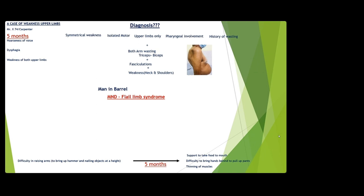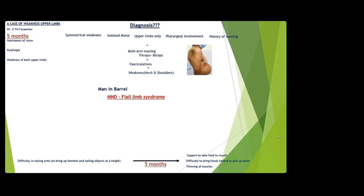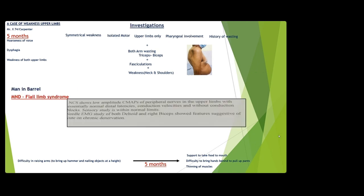What is flail limb? The EMG and nerve conduction study showed low amplitude compound action potentials of peripheral nerves in the upper limb with essentially normal distal latency, conduction velocities, and without conduction blocks; sensory studies within normal limits. Needle EMG of both deltoid and right biceps showed features of acute-on-chronic denervation. This is consistent with neuropathy, not myopathy — consistent with motor neurone disease.